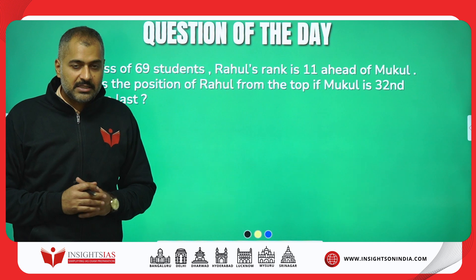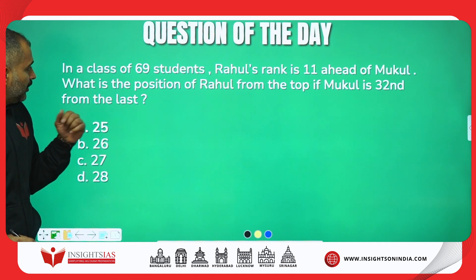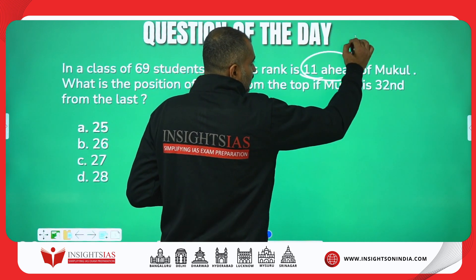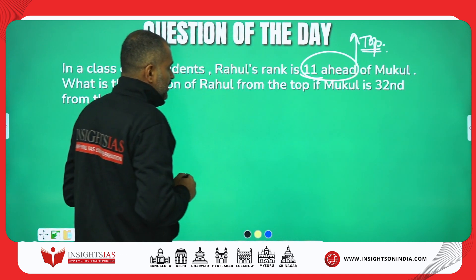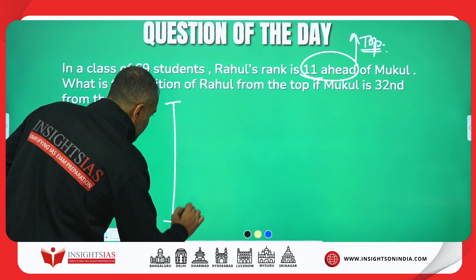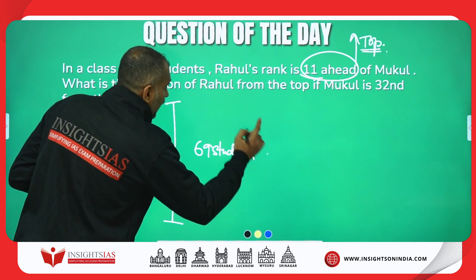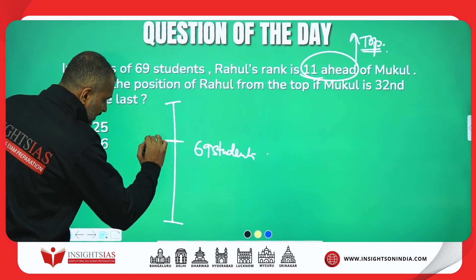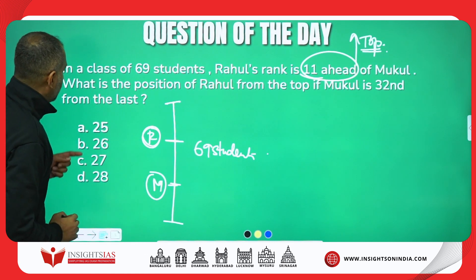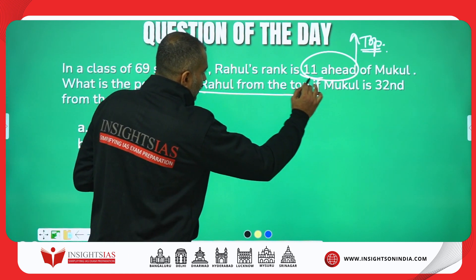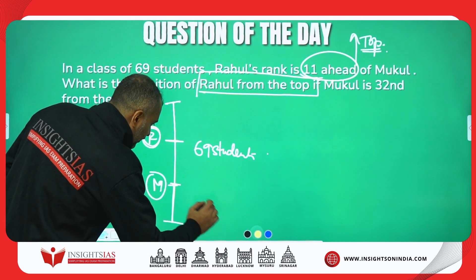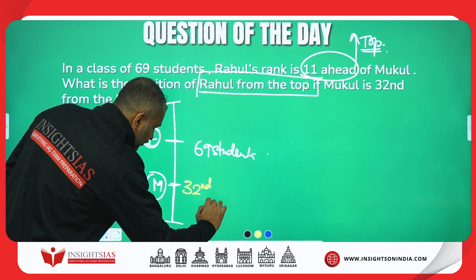This is the question of the day, guys, and the topic is ranking and order. In a class of 69 students, Rahul's rank is 11 ahead of Mukul. Ahead means towards the top — towards first place. Let us consider this is Rahul and this is Mukul. Mukul is 11 behind Rahul. What is the position of Rahul from the top, if Mukul is 32nd from the last?